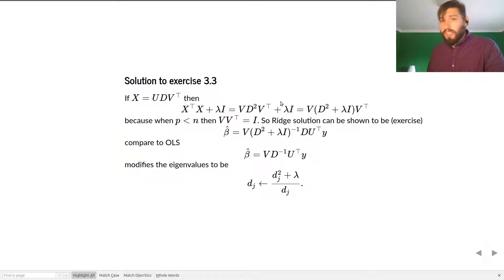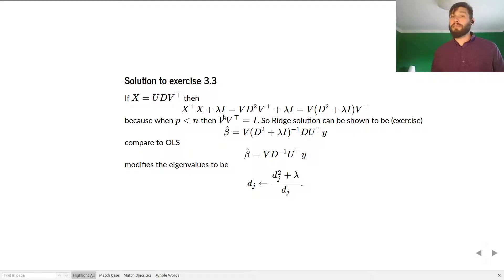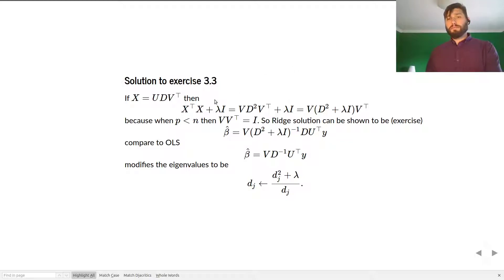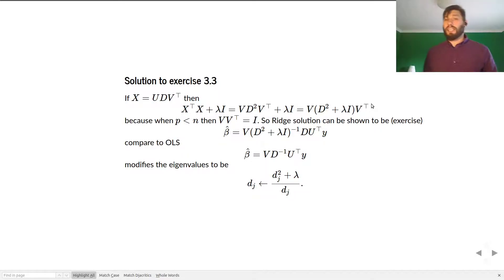The point is that X transpose X and the identity are both simultaneously diagonalizable. That's a fact about the identity matrix — it's simultaneously diagonalizable with every other diagonalizable matrix. So we can write this as V times D squared plus lambda I times V transpose. This assumes that P is less than N; otherwise we have to do a couple of other things, but it's still feasible.